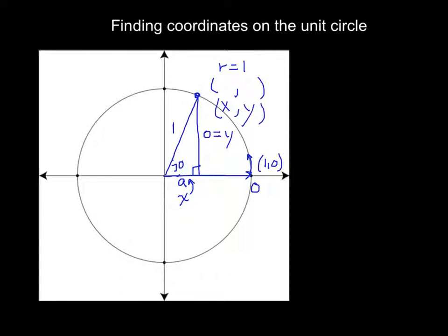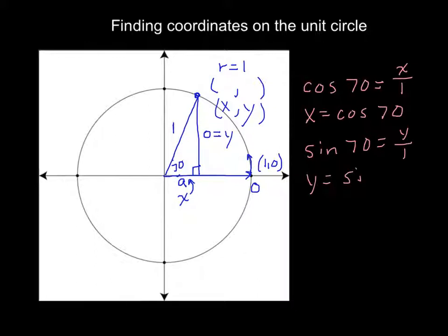So we can set up a quick trig function to solve that, which would be the adjacent side. We have the hypotenuse, so we're going to use cosine of 70 equals x over 1. Well, cosine 70 equals x, so x equals cosine 70. And we can do the same thing for the opposite side. Sine 70 equals y over 1. So y equals sine 70. So those are our coordinates. That coordinate right there is cosine 70, sine 70.